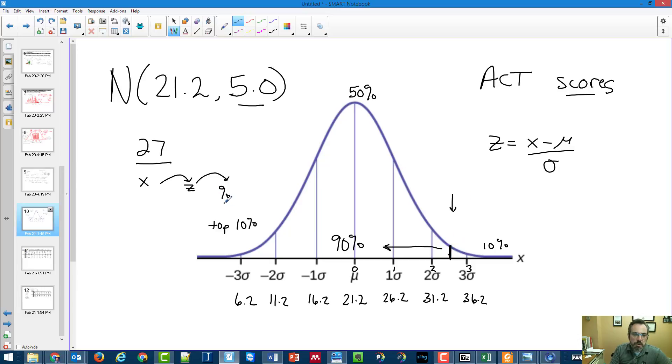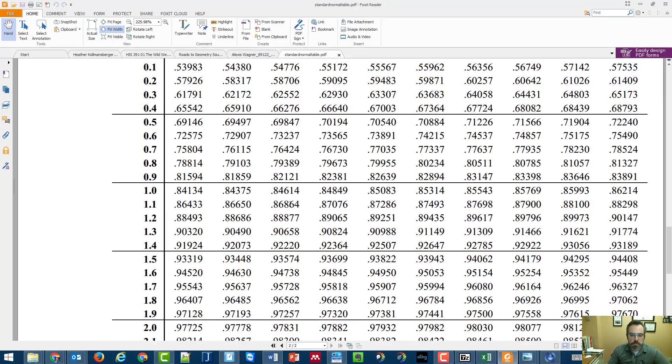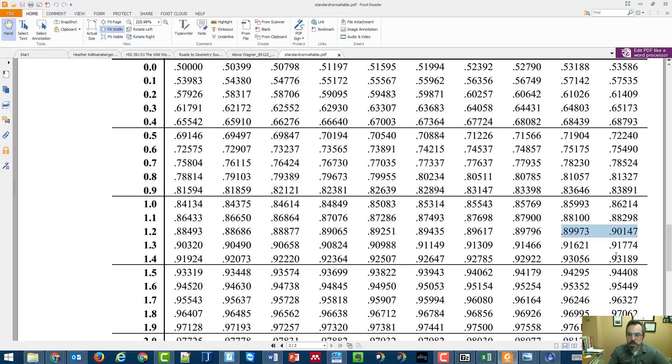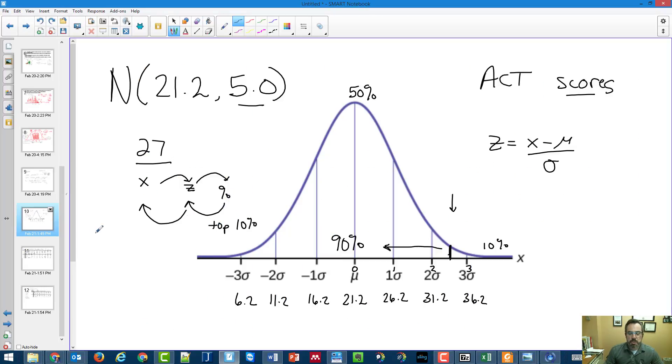Now I'm going backwards. Start with that percent, find the z-score, and then work backwards to get x. So once again, pulling up our table, I have to find 90%. And it looks like in my table that my two closest values are right here. If I were to look really carefully, I would notice that this one is closer. So 1.2, because if I go all the way across, that's 1.2. And if I look up, it's 1.28. That's my z-score. So I've done the first step. I've gone from my percent to my z-score.